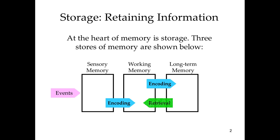What we see is that information goes in, gets encoded, stays in working memory for a little bit, moves over to long-term memory, and then when we need it, we retrieve it and it comes out in whatever format we use the information. This is the basic way in which memory operates.